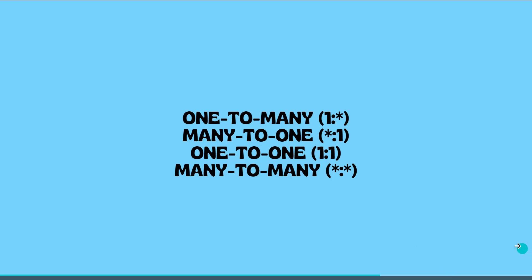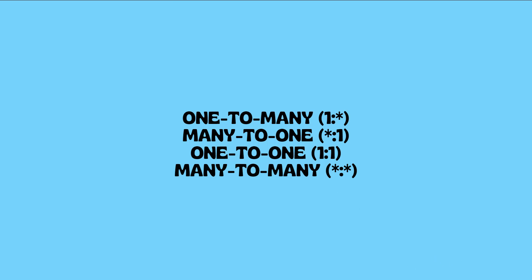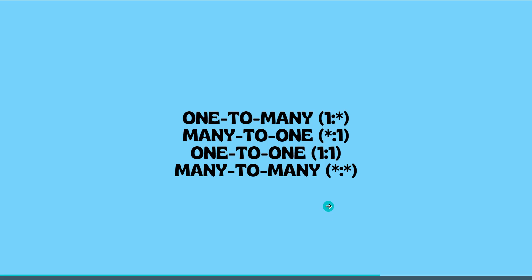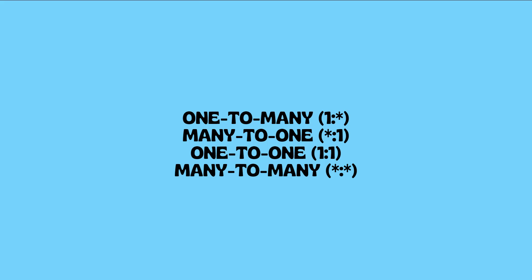Before we get data, we have to make sure that both tables contain any one of these relationships. I will show you how to make the relationship and get data from two different tables and display the stacked bar chart in Power BI.